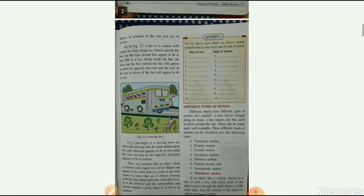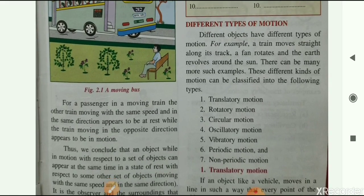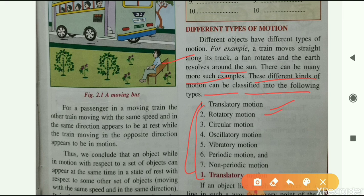Today in this video we will discuss different types of motion. Different objects have different types of motion — for example, a train moves straight along its track, a fan rotates, and the earth revolves around the sun. These can be classified into the following types: translatory motion, rotatory motion, circular motion, oscillatory motion, vibratory motion, periodic motion, and non-periodic motion.